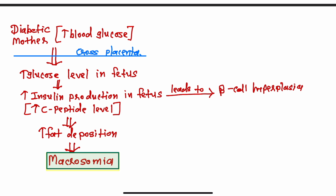The mother is diabetic, so she has a high blood glucose level. This high blood glucose crosses the placenta, which increases the blood glucose level in the fetus. When the fetal blood glucose level increases, the fetal pancreas tries to control it by increasing insulin production.